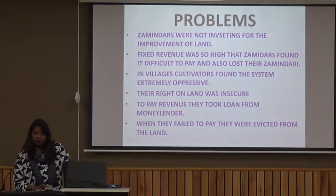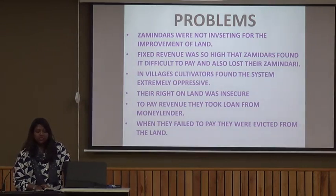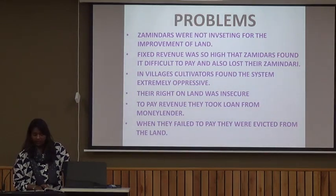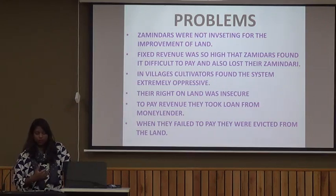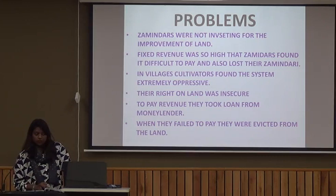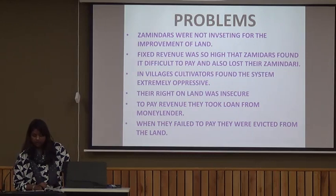There were certain problems with this system of Permanent Settlement. First, Zamindars were not investing for the improvement of land — they were dishonest and just wanted their own profit. Next, the revenue which was fixed was too high, and the Zamindars found it difficult to pay and also lost their zamindari.